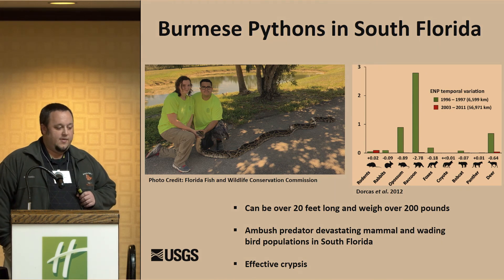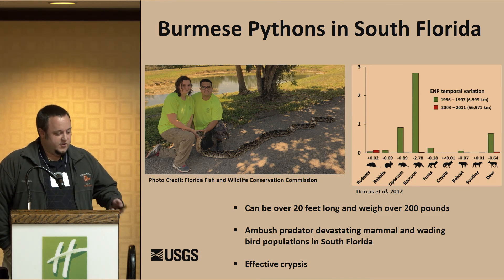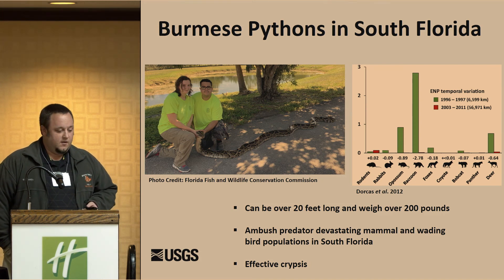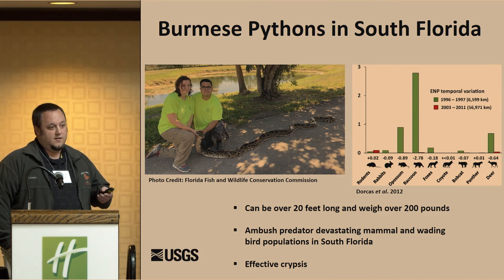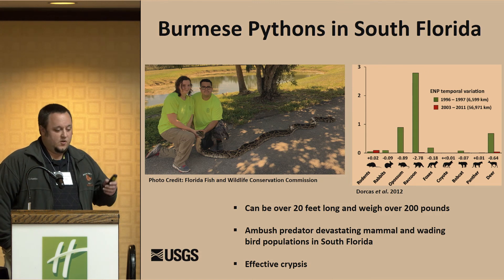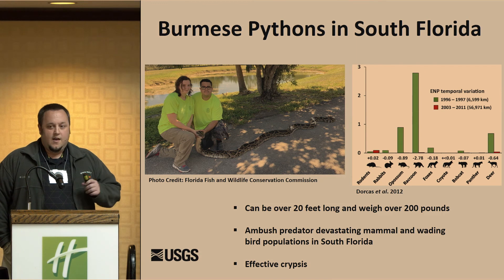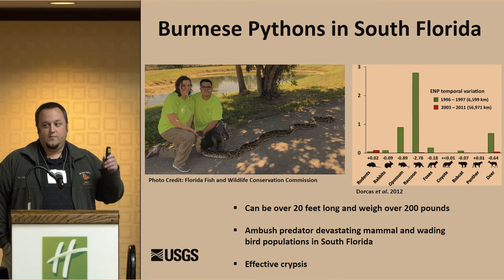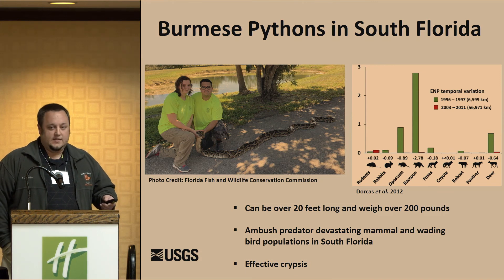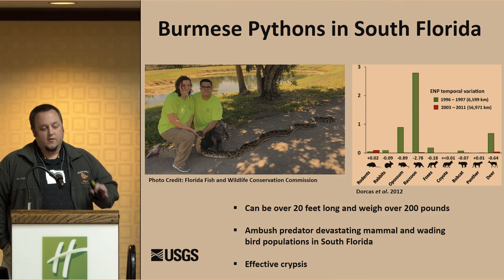Another example is the Burmese python in South Florida, where a group at Gainesville led by Margaret Hunter is using eDNA for detection. These are a real problem — they get up to 20 feet long and 200 pounds, eating the mammals and birds we want to see in the wetlands and wreaking havoc in the Everglades. They are very effective at crypsis; teams can almost step on them without finding them. They're basically only found when crossing roads, getting hit by cars, or even planes on runways.